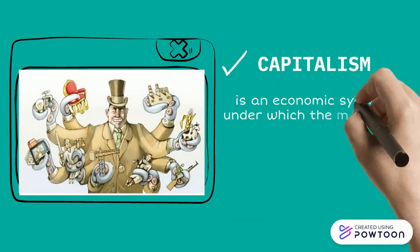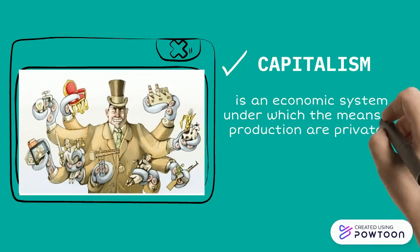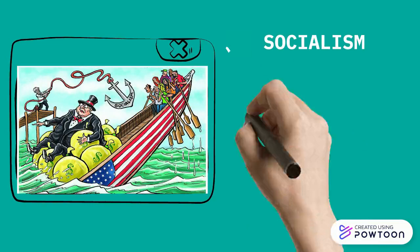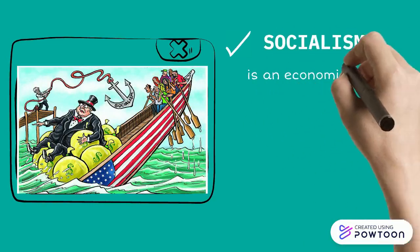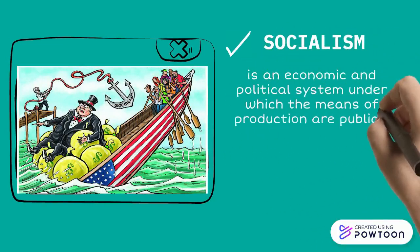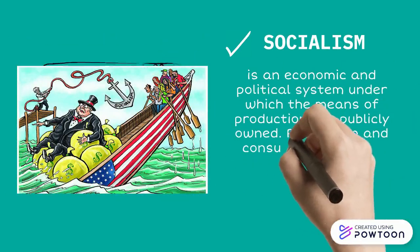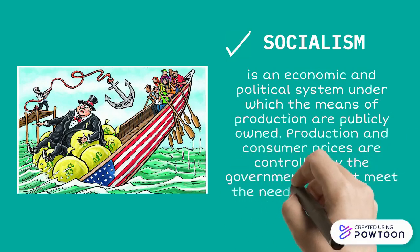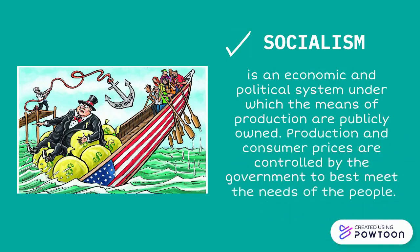We also have capitalism. It is an economic system under which the means of production are privately owned. Production and consumer prices are controlled by the government to best meet the needs of the people.